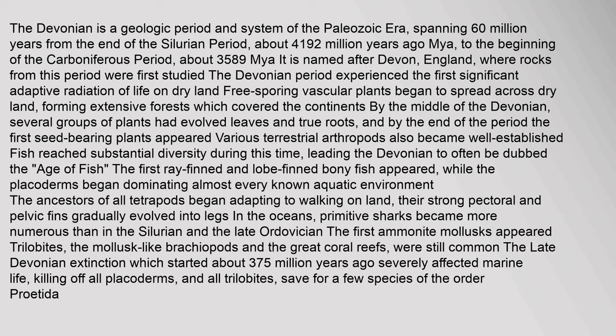In the oceans, primitive sharks became more numerous than in the Silurian and the late Ordovician. The first ammonite mollusks appeared. Trilobites, the mollusk-like brachiopods, and the great coral reefs were still common. The late Devonian extinction, which started about 375 million years ago, severely affected marine life, killing off all placoderms and all trilobites, save for a few species of the order Proedida.